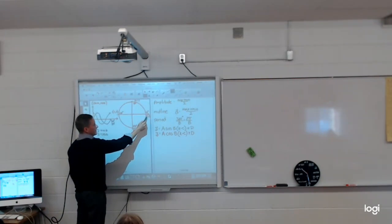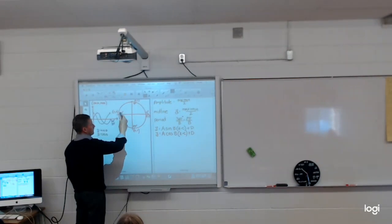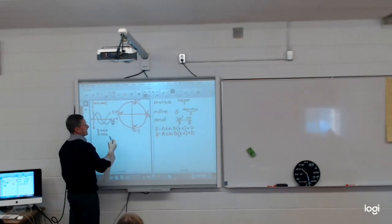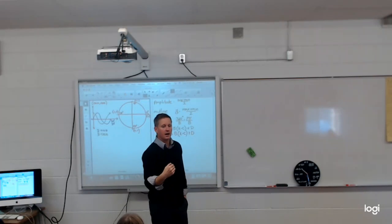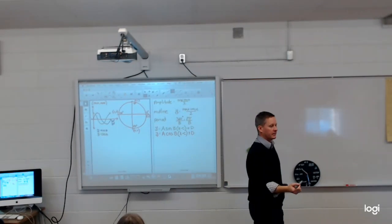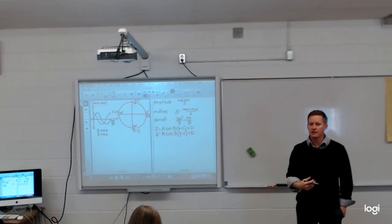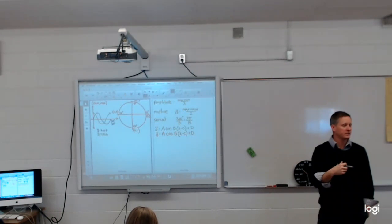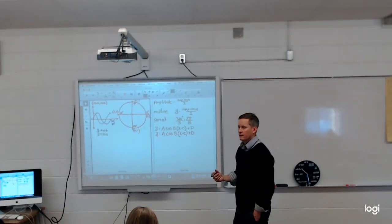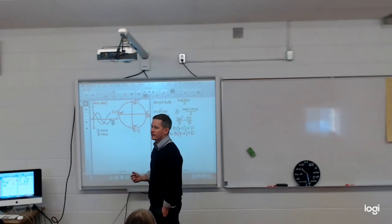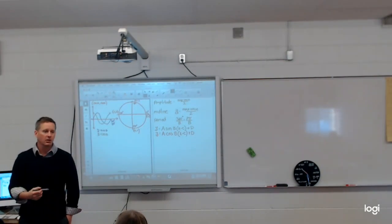Why does cosine start there? Because of the circle. Cosine at 0 degrees is 1. Cosine at 90 degrees is 0. Cosine at 180 is negative 1. If you don't believe me, you can punch that into your calculator — it'll tell you. If you put in cosine of 0 degrees, you'll get an answer of 1. Cosine of 90 gives an answer of 0.